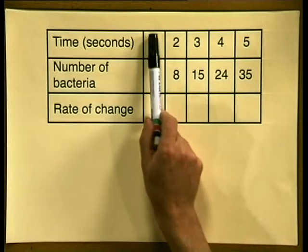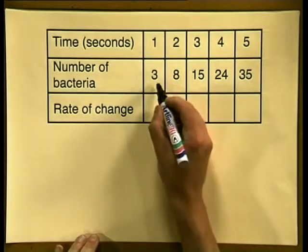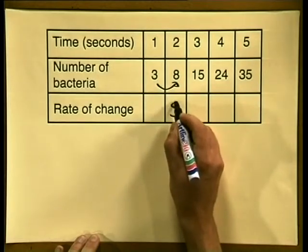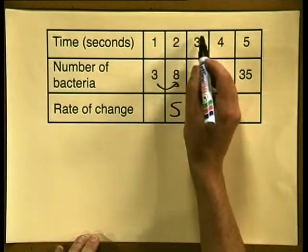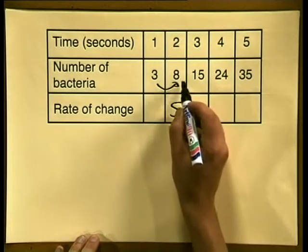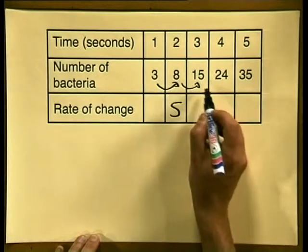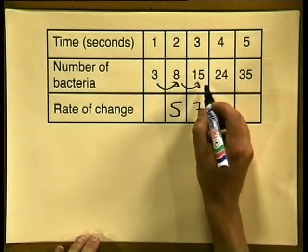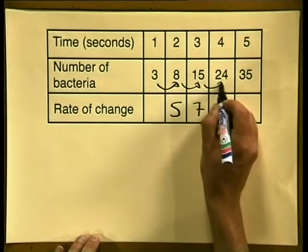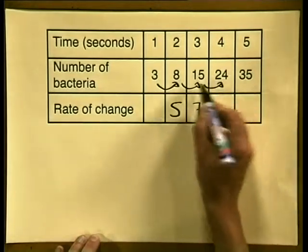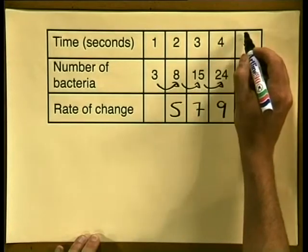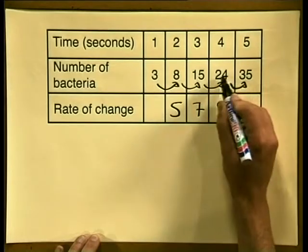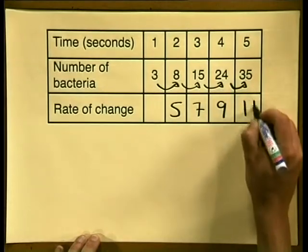Now for the first unit change in the input values we can see that the output changes by 3 to 8, it changes by 5 units. The next unit change in the input values results in a change from 8 to 15 in the output values, in other words a change of 7. The next unit change in the input values results in a change from 15 to 24 in the output values, in other words a change of 9. And the last unit change in the input values makes the output change from 24 to 35, in other words there is a change there of 11 units.